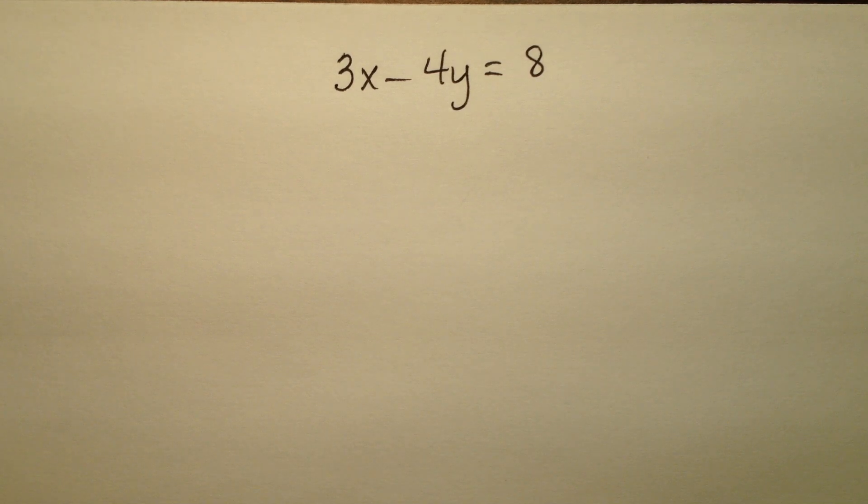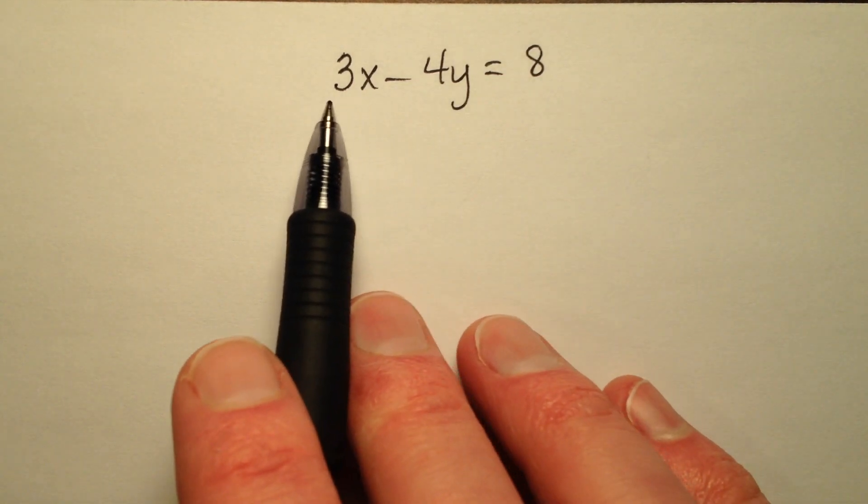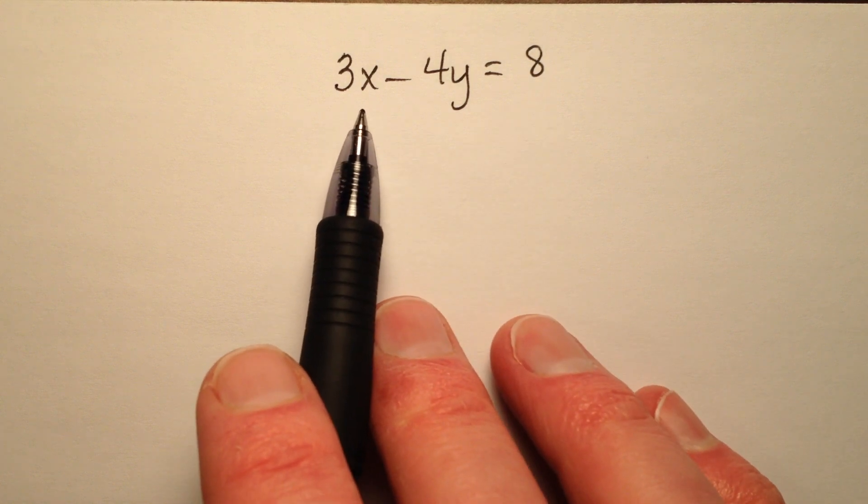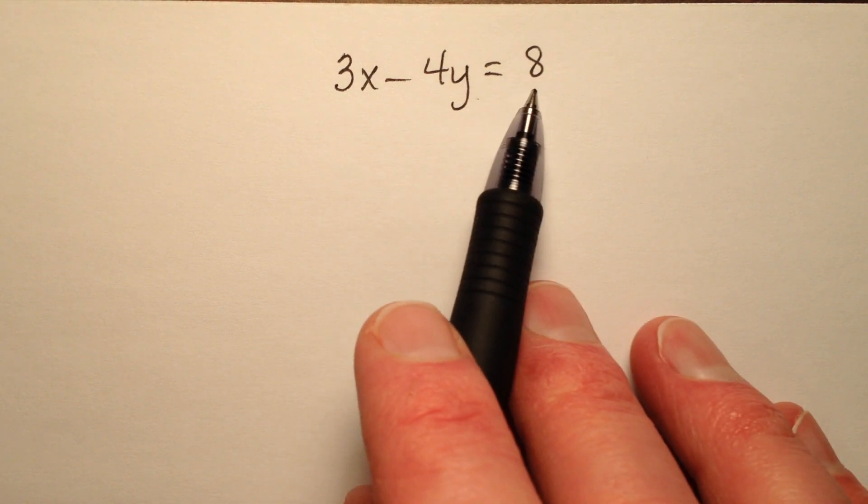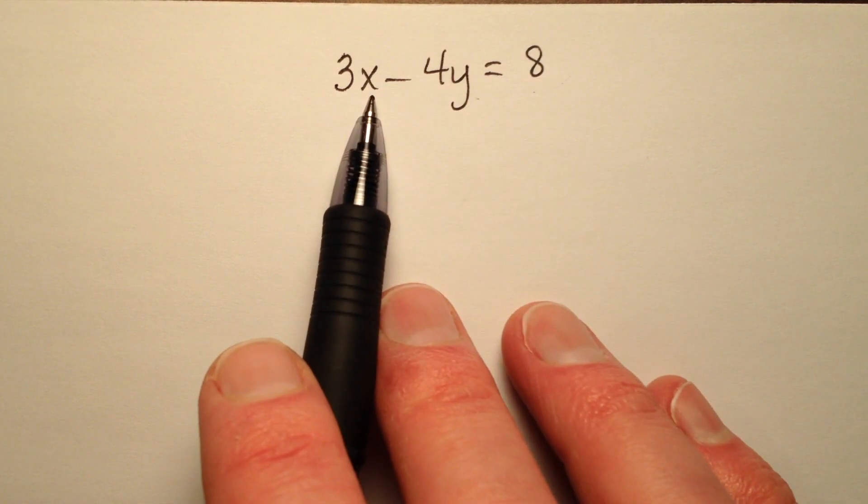In this example, I'm going to graph the line whose equation is given to us as 3x minus 4y equals 8, and this is in standard form.